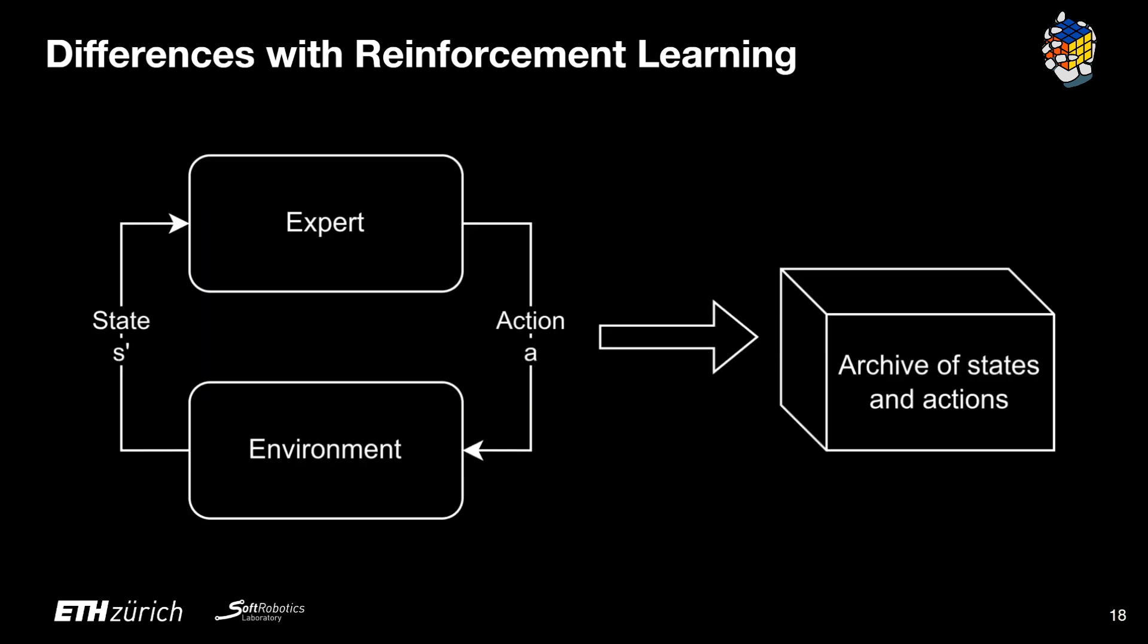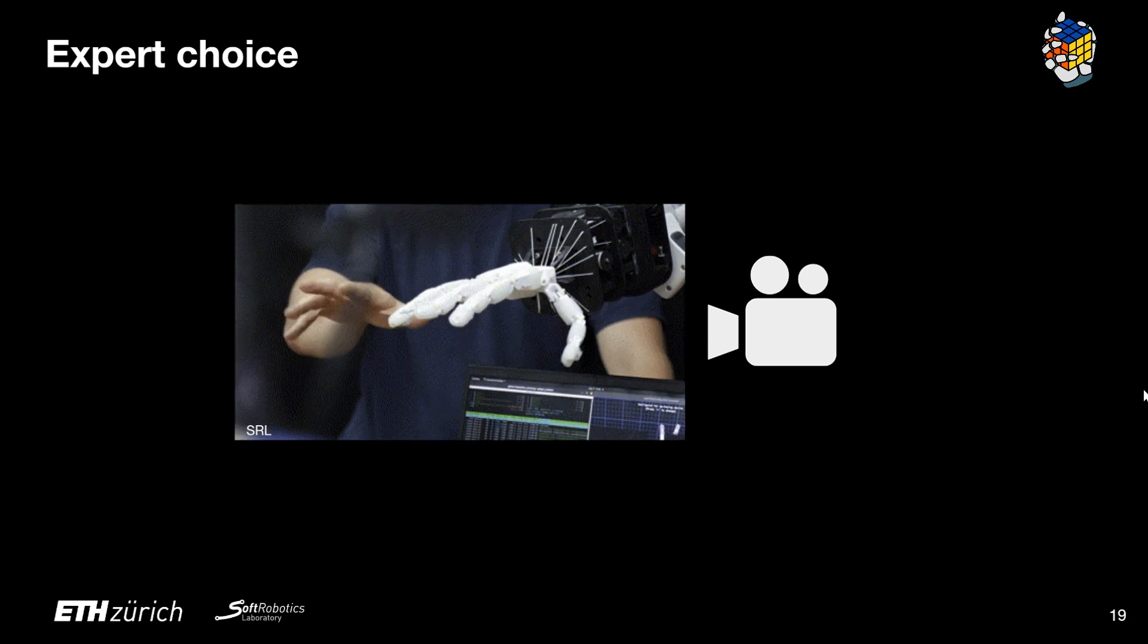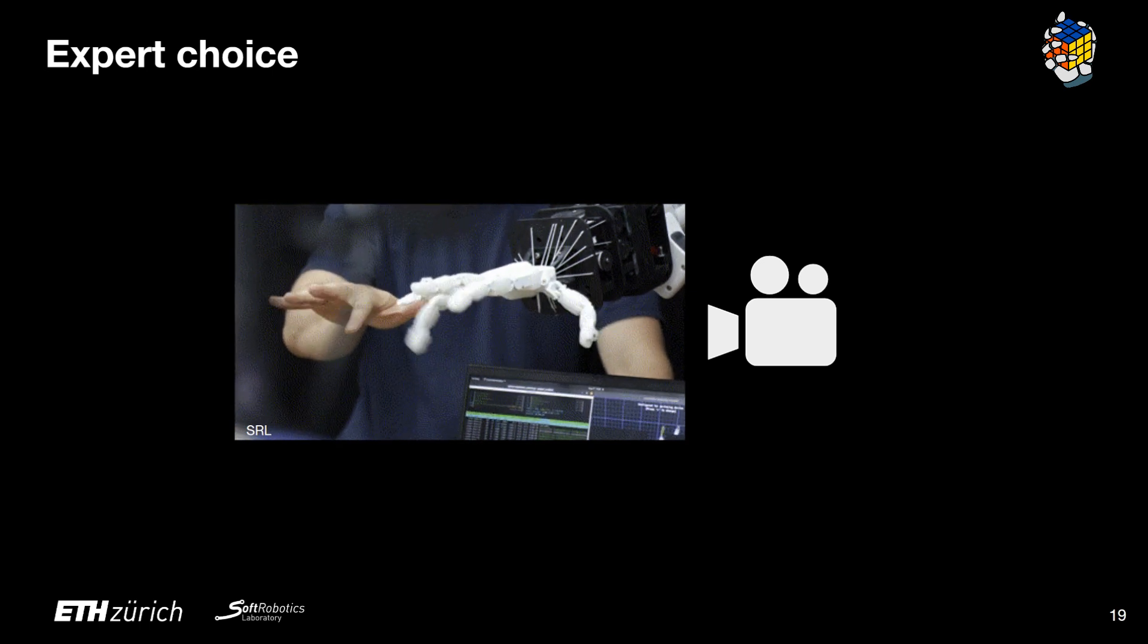The transitions are sampled from an expert which we want to imitate with our model. The expert could be, for example, a human operator performing the task or a controller that has access to additional information such as the 3D position of the robot in space. From the perspective of the final class challenge, we could record data of a person grasping an object and then use this data to train the model.